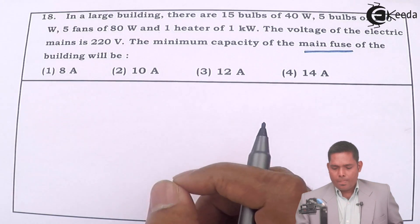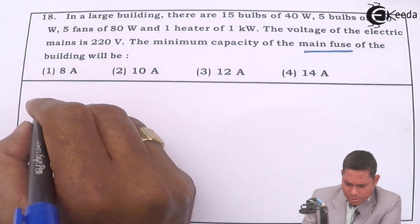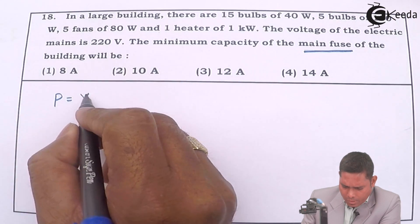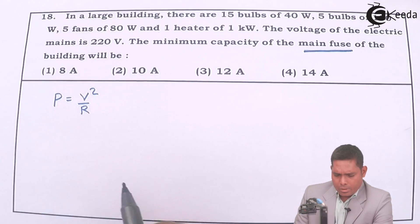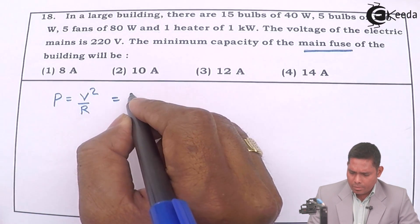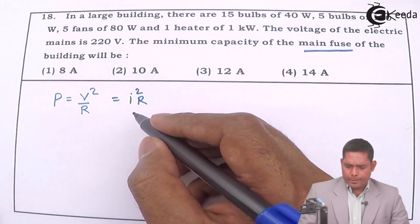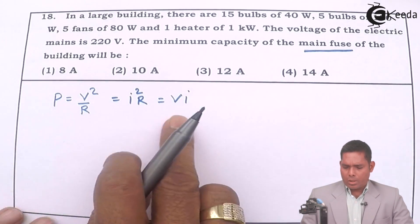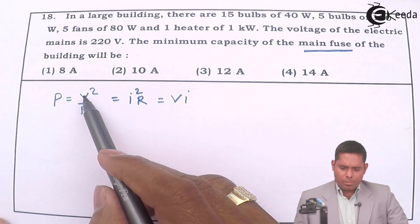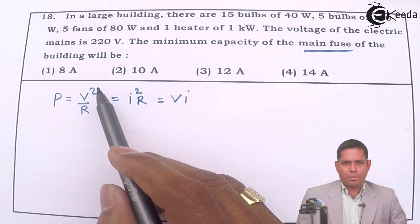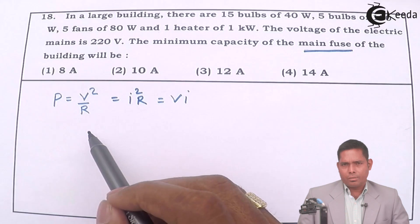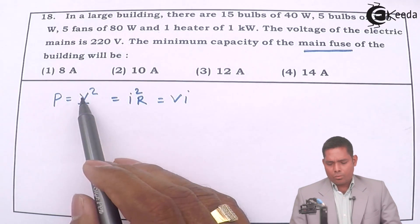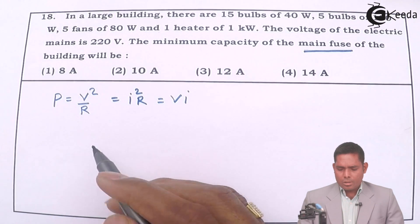The formula for power is V square by R and also it is I square R and also VI. So there are three formulae. We will use this formula because the potential difference, the voltage is constant in parallel connections. Whatever is constant, that formula will use. So in parallel connection, the voltage is constant. This means power is inversely proportional to resistance.